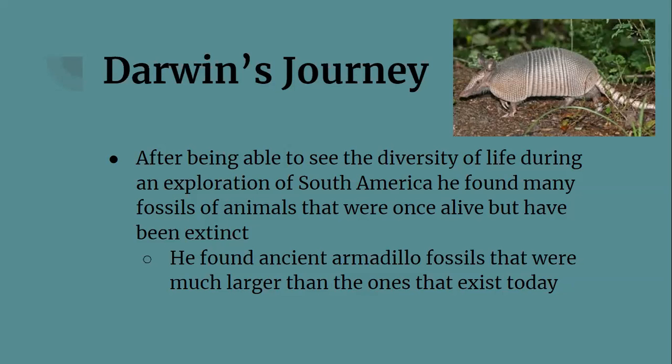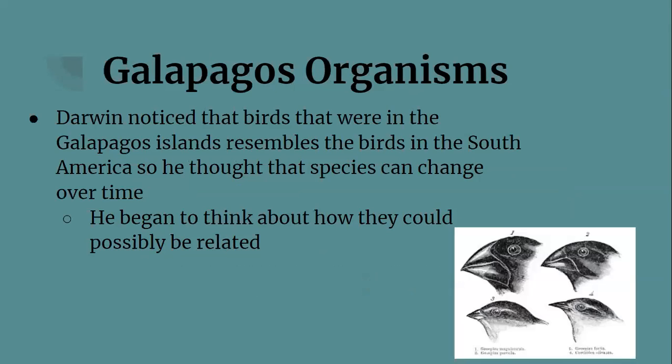Aboard the Beagle, Darwin also observed fossils of animals that had died long ago. Some of the fossils confused him — for example, he found fossils that resembled the bones of living armadillos but were much larger. Darwin wondered what had happened to the ancient giant armadillos, since the ones we have today are quite small. Over long periods of time, could the giant armadillo have evolved into the smaller species we see today? This is where he really started thinking about how the process of evolution began to occur.